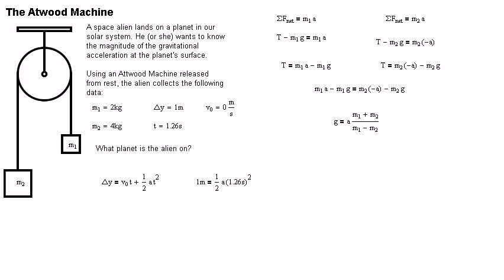Solving for A. A equals 1 meter divided by 1 half times 1.26 seconds squared. Plug it into your calculator. And you'll get that A equals 1.2598 meters per second squared.